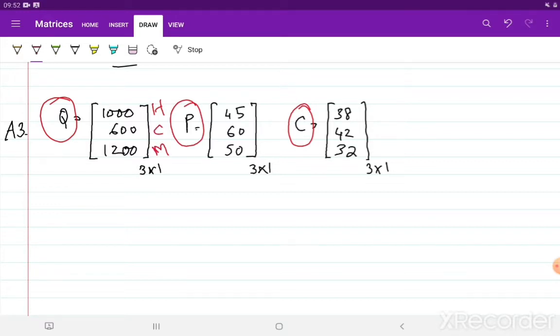Right, so the same corresponds to each matrix. Now, what is TR? What is TR? Now, TR is equal to price times quantity.